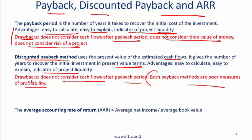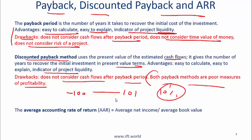Is it possible to have a project with a short payback period and a negative NPV? The answer is yes. If you invest 100 and get your money back as 101 dollars after one year, this is a one-year payback — but if the discount rate is 10%, then this is obviously a negative NPV project.